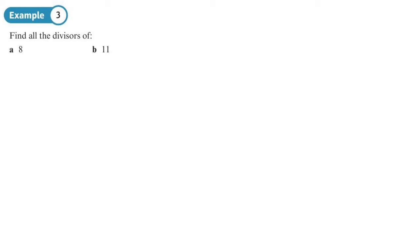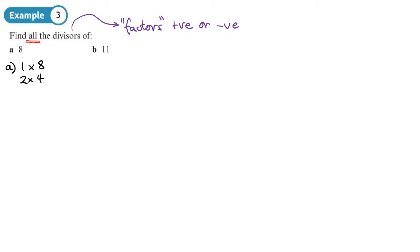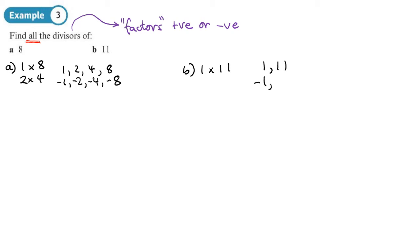This question asks us to list all divisors of given numbers — remember divisors can be positive or negative. For 8: listing multiplications gives 1×8 and 2×4, so positive factors are 1, 2, 4, 8 and negative divisors are −1, −2, −4, −8. For 11: it's a prime number, so the only positive divisors are 1 and 11, and negative divisors are −1 and −11.